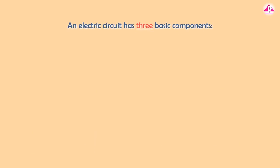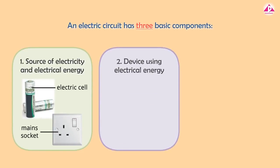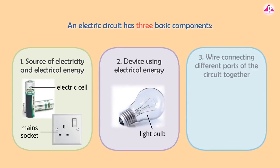An electric circuit has three basic components: 1. Source of electricity and electrical energy. 2. Device using electrical energy. 3. Wire connecting different parts of the circuit together.